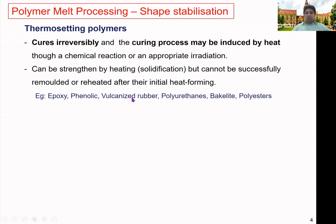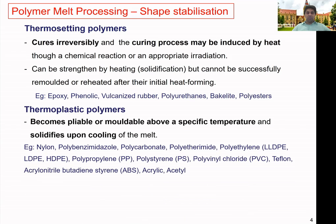Although thermosets cannot be reprocessed, they are still important materials — polyurethane and Bakelite are heavily used because they have specific properties not obtainable from thermoplastics. Thermoplastic polymers become moldable above a specific temperature and solidify upon cooling of the melt, meaning they can be reprocessed and recycled. Examples include nylon, polycarbonate, polyethylene (LLDPE, LDPE, HDPE), polypropylene, polystyrene, and PVC.